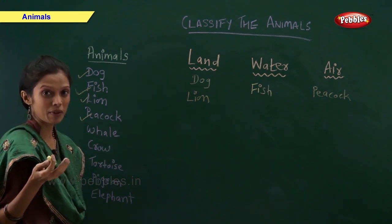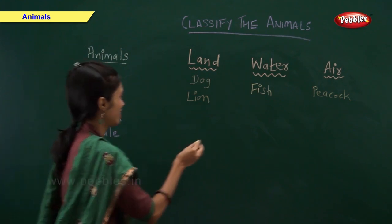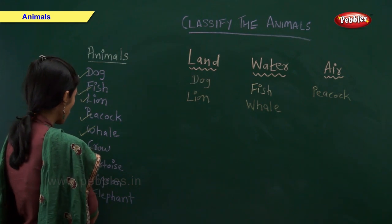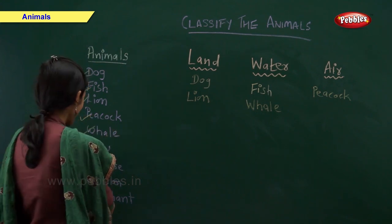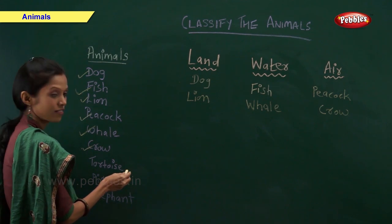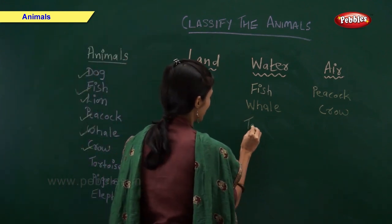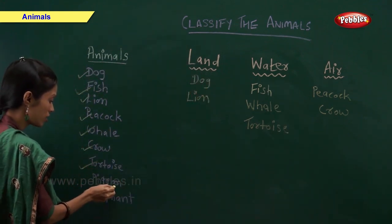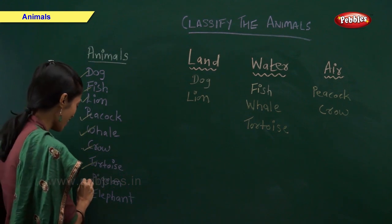Whale — whale is a water animal. Crow — crow is an air animal. Tortoise — tortoise is a water animal. Pigeon — pigeon is an air animal.